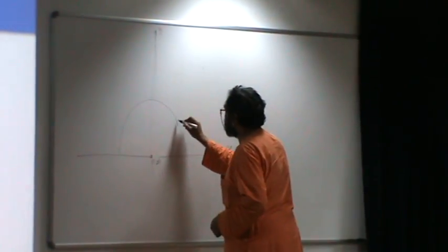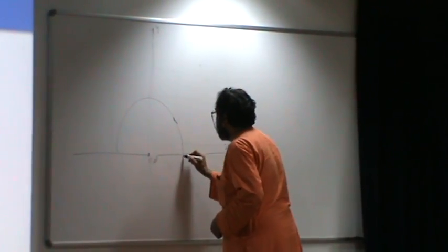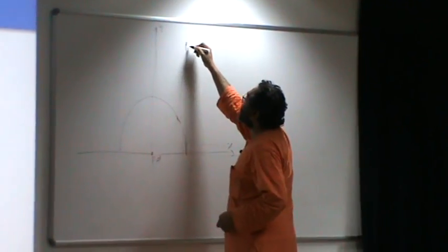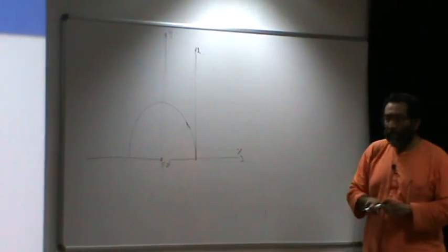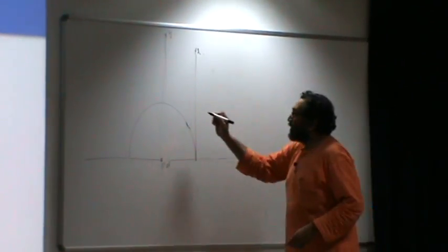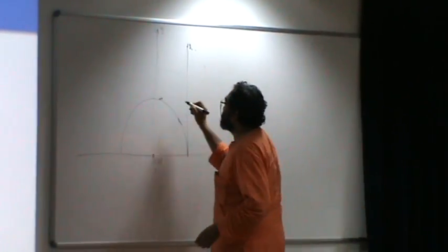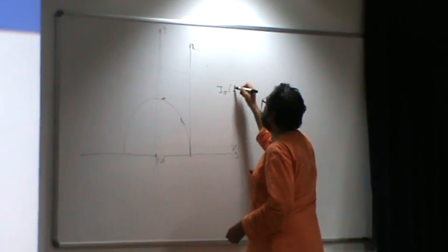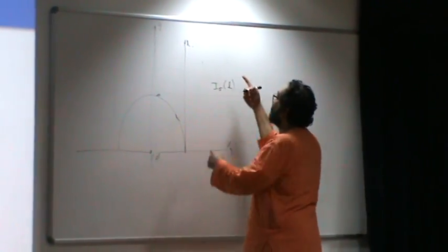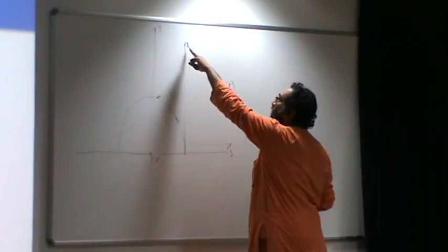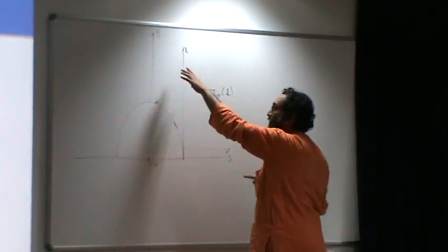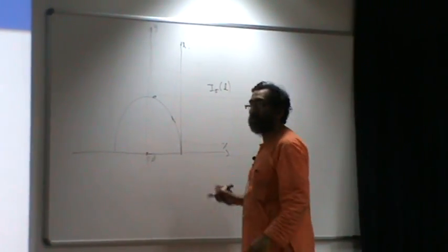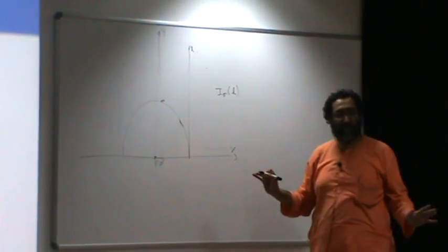You have this semicircle — take this vertical line here. This is your L. This is your sigma, and I want to compute the inversion: L inverted about this semicircle. What is that? That is my question.